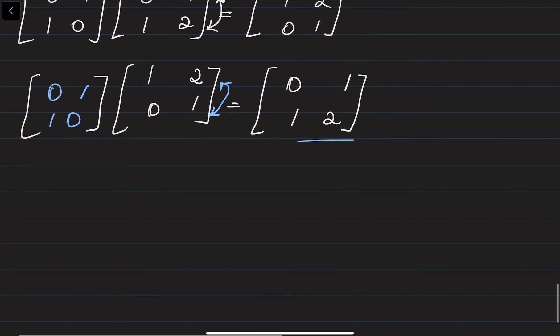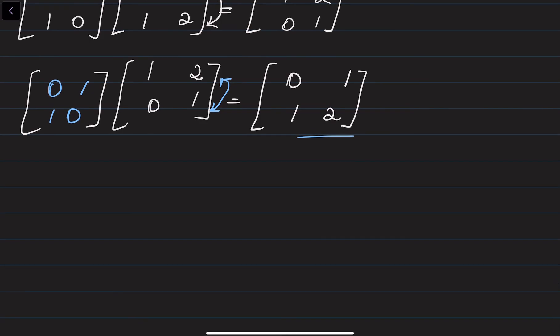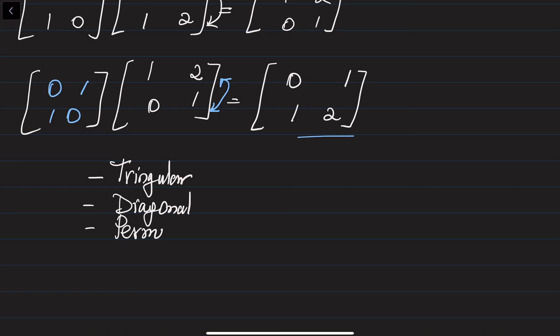So we've defined the three elementary matrices. Essentially, the triangular matrices — what they do is multiply a row by a constant and add this into another one. We talked about the diagonal matrices — what they do is scale the rows, multiplying a row by a constant. And also we talked about the permutation matrices, which interchange two rows. We're going to use these three row operations in order to factorize the matrices, for example using LU decomposition, in our next videos.